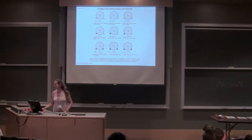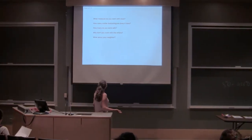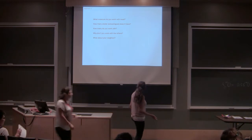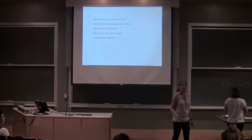But so what I want you guys to sort of think about is get your head around this. What molecule do you work with most? How many stable isotopologues does it have? How many do you work with? Why don't you work with the others?